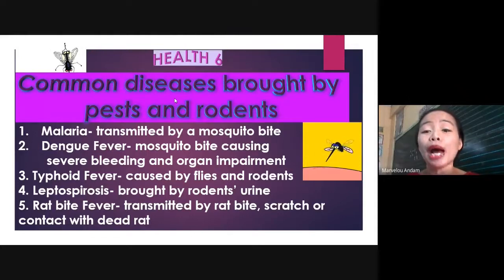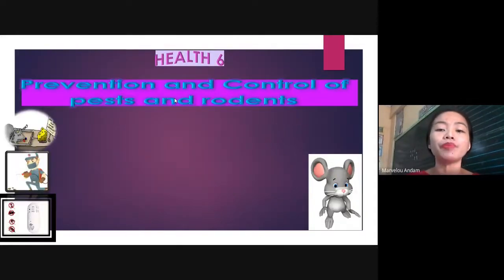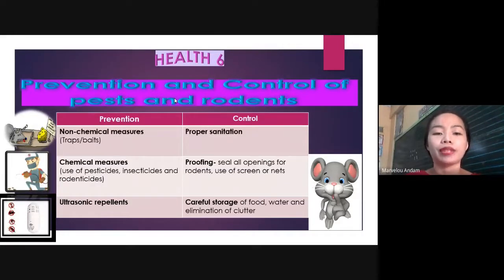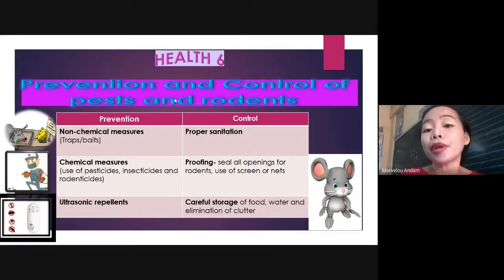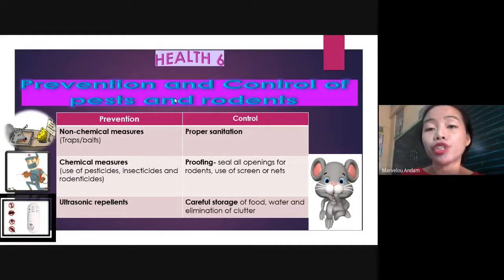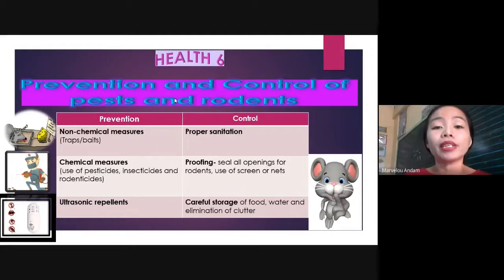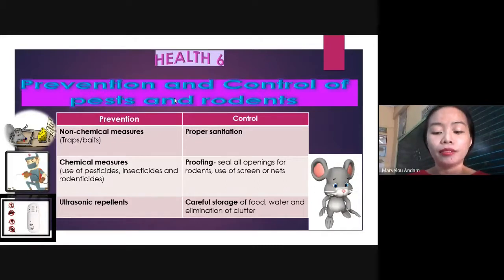So we should learn how to prevent and control them to avoid further problems. These are the prevention and control of pests and rodents. We can prevent them through non-chemical measures such as traps or baits, and we can control them by proper sanitation — by throwing or disposing our garbage carefully and correctly. We can also prevent these pests and rodents through chemical measures by using pesticides, insecticides, and rodenticides.